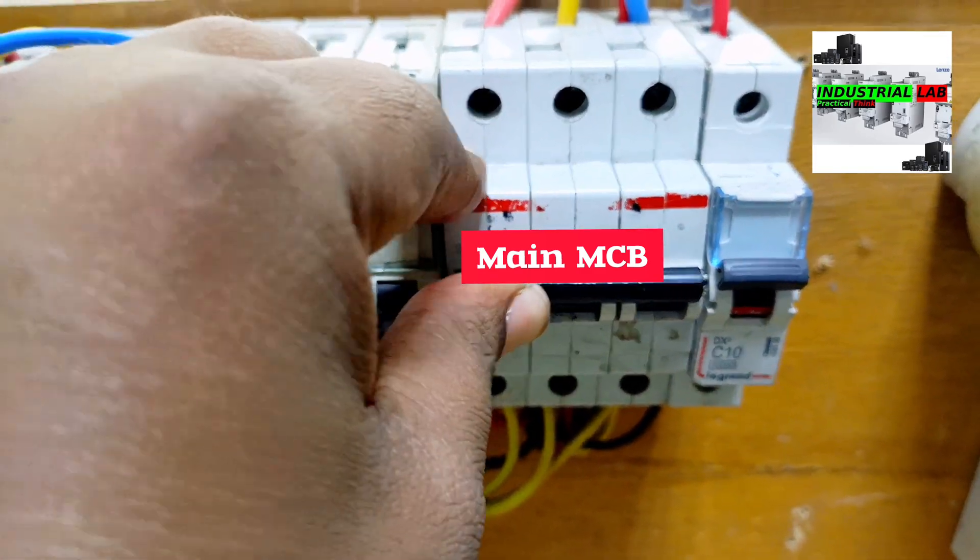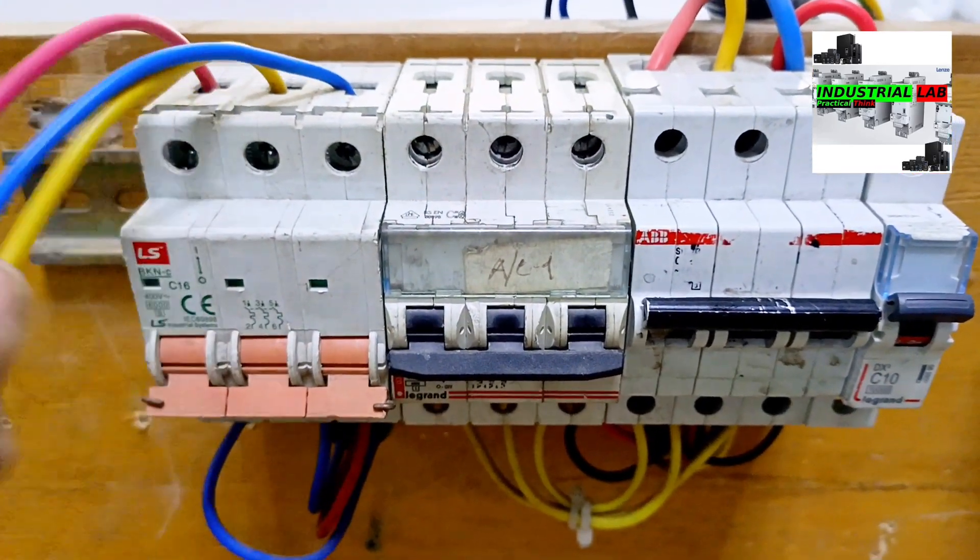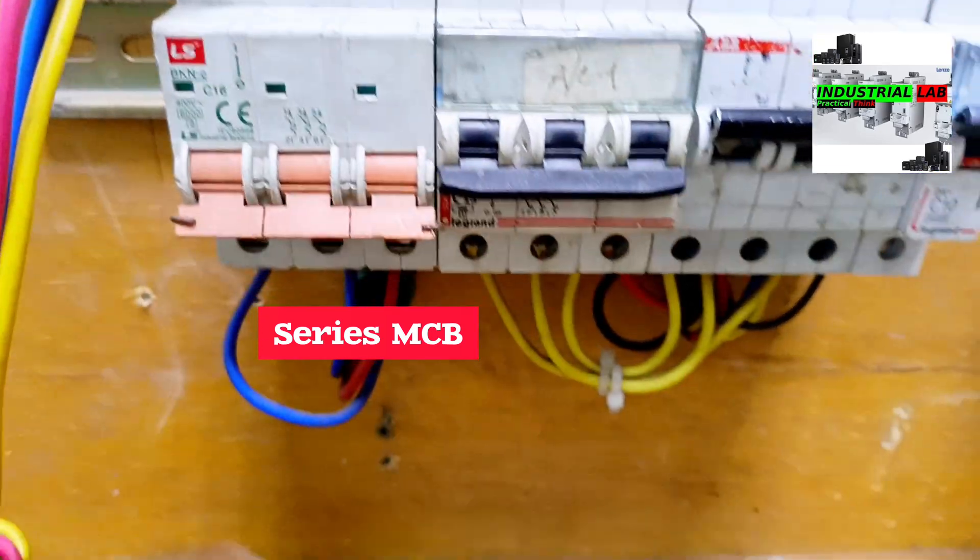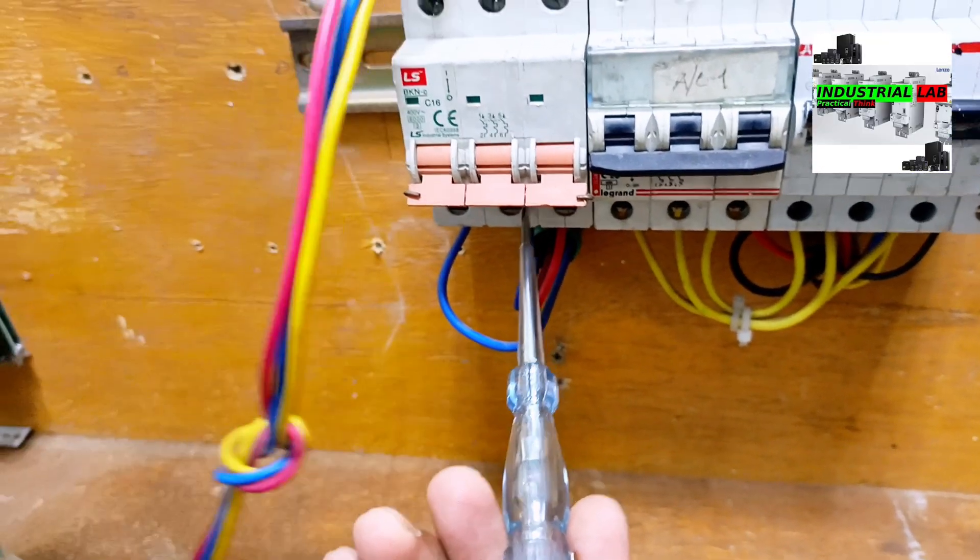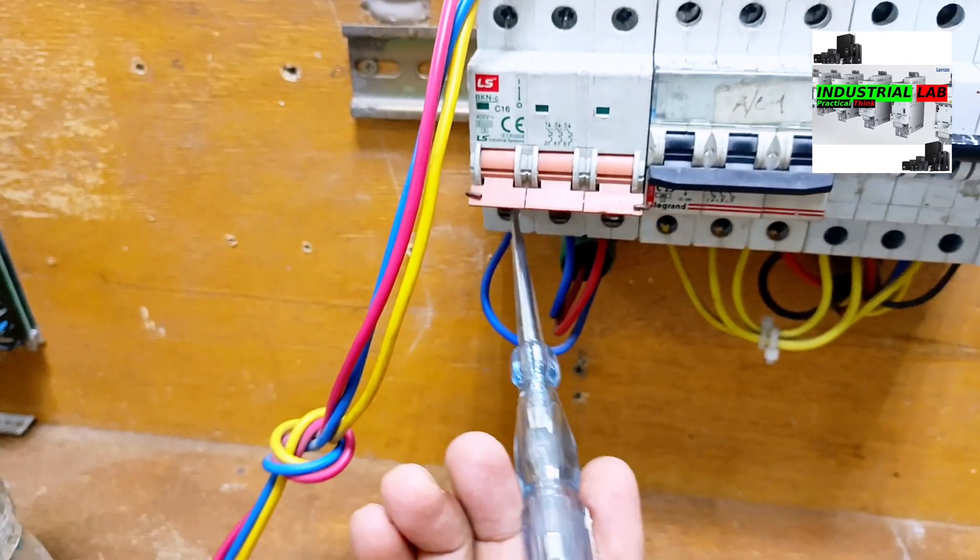When I connect the main circuit breaker, then power moves to series circuit breaker via series lamp. Now you see here the tester is lighting also. 1-phase, 2-phase, and 3-phase.